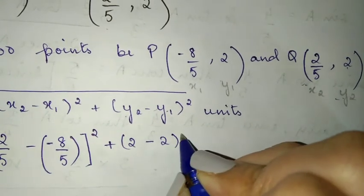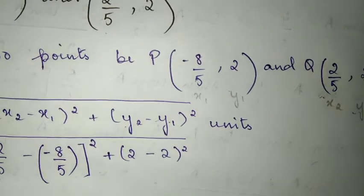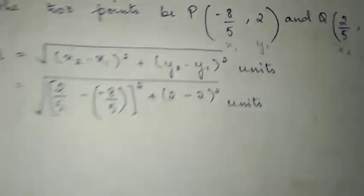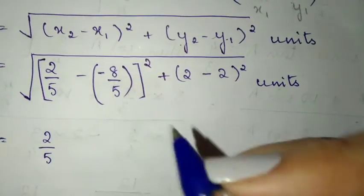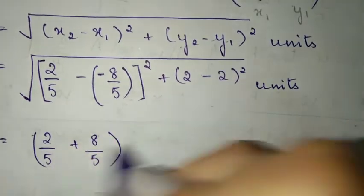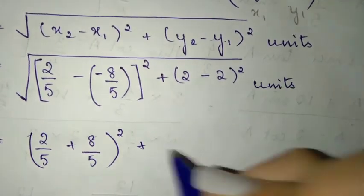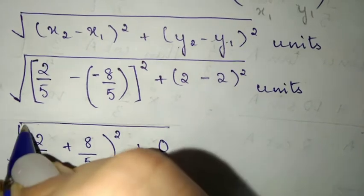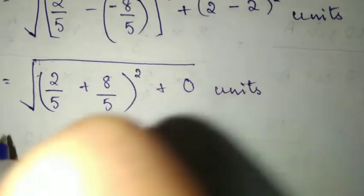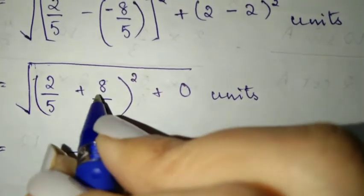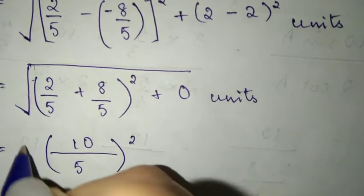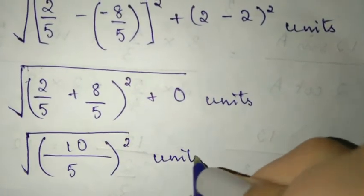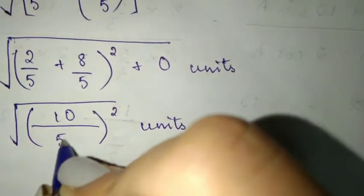Let's solve the brackets. Minus into minus will give you plus 8 by 5, so it becomes 2 by 5 plus 8 by 5, whole square. And 2 minus 2 is 0, so 0 squared is 0 — you can just neglect that part, you don't have to write plus 0. Over here you have the same denominator so you don't need to find LCM, just write 5, and 8 plus 2 will give you 10. So you have 10 by 5, which you can directly write as 2. I'm just doing it step by step for those of you who are new to it.